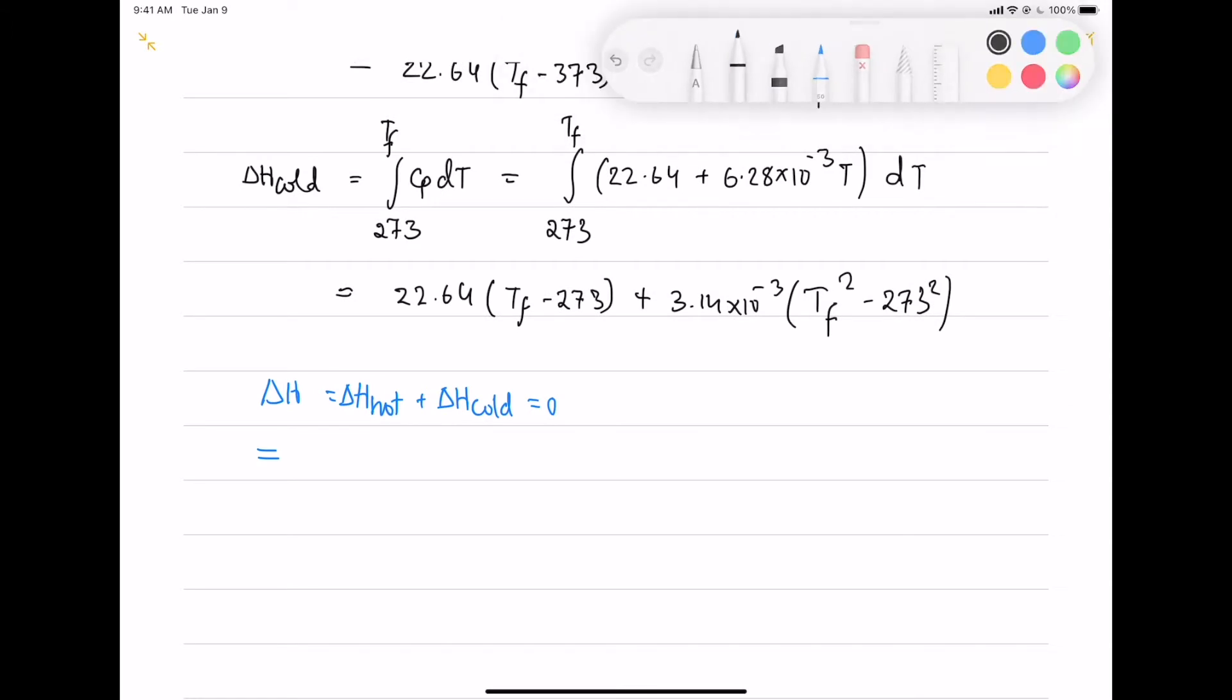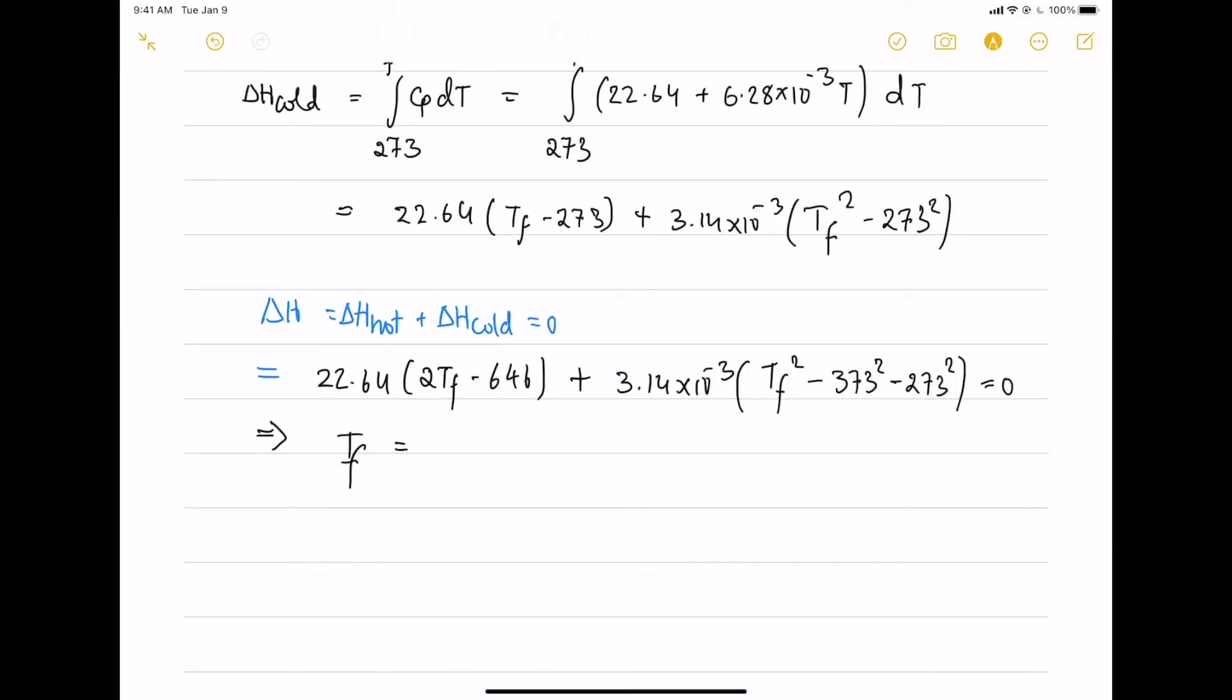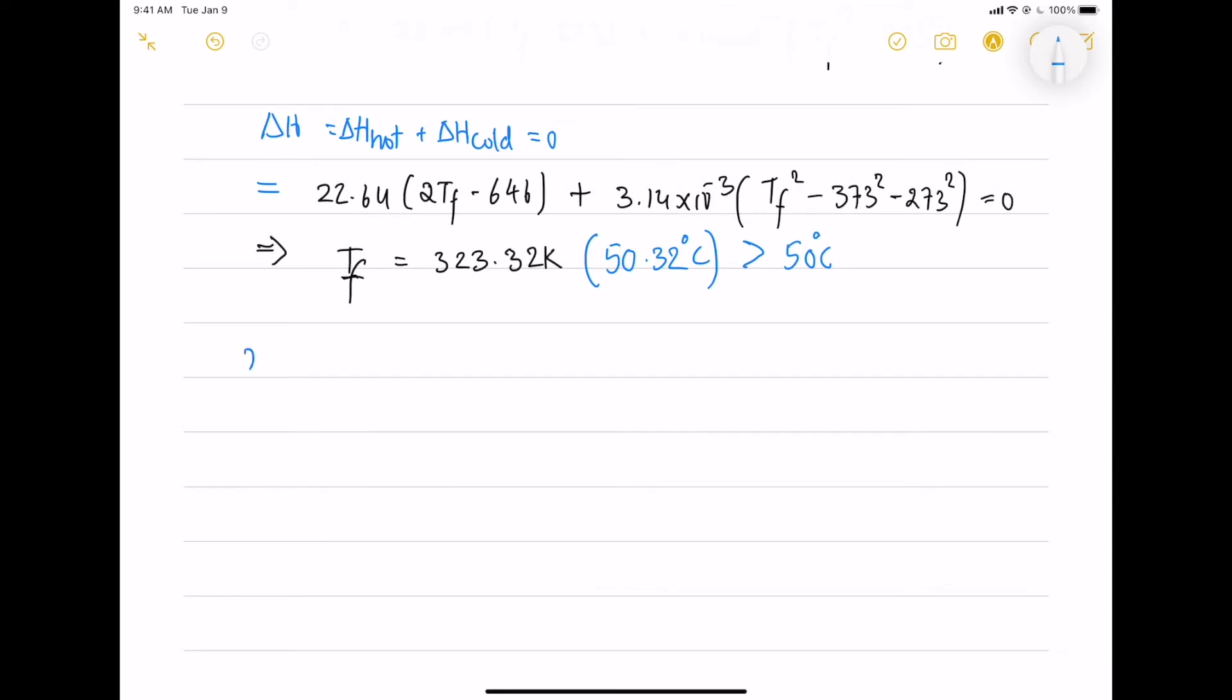The delta H cold plus hot is 0, so we will be left with a quadratic equation and here it is 2F square not TF square. I made a mistake. So the final temperature would be 323.32 Kelvin which is greater than the average value expected.